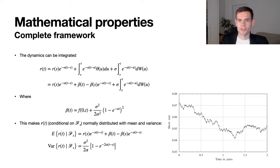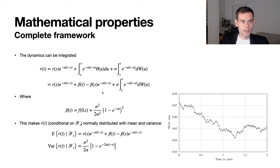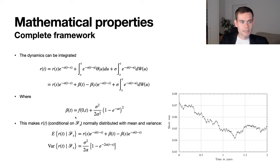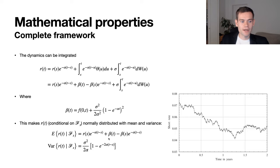Looking at the mathematical properties of the SDE, we note the following: the equation can be integrated and solved explicitly, meaning r(t) can be derived as an expression in terms of an earlier time s. This time s can be set to zero or any intermediate point. A new term beta is introduced in this expression. Through this derivation, we arrive at a normal distribution for r(t) — consistent with what was noted earlier — and we can identify the mean and variance of this normal distribution.